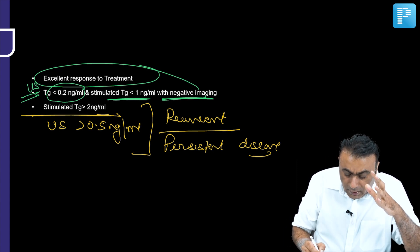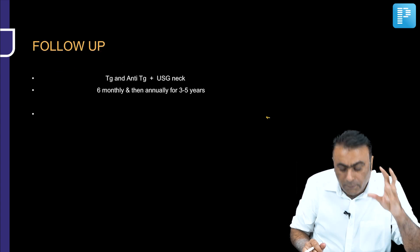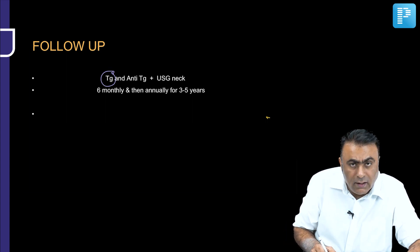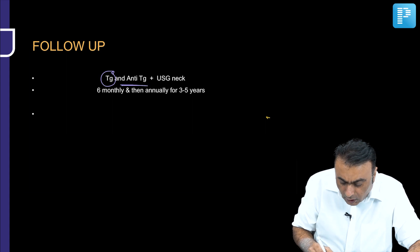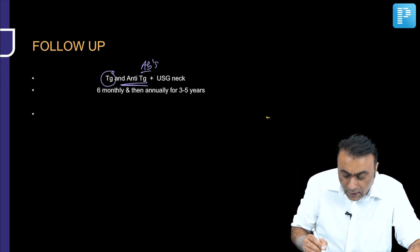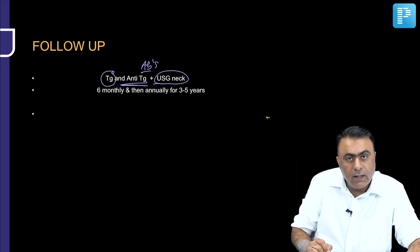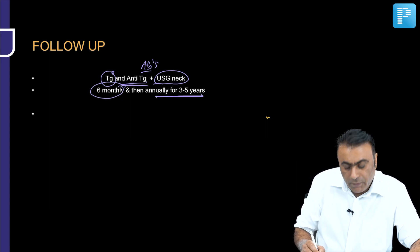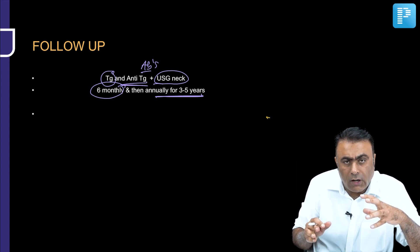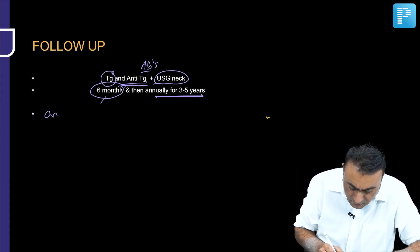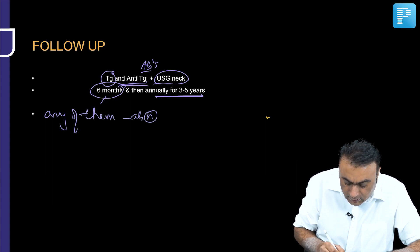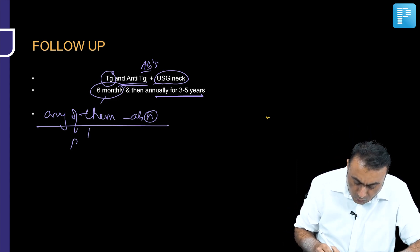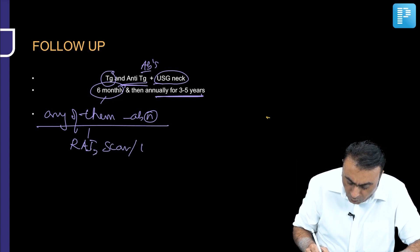For follow-up after completing treatment, we mainly do two investigations: thyroglobulin levels along with antithyroglobulin antibodies, and imaging with ultrasound of the neck. The frequency is initially 6-monthly, then annually for 3 to 5 years. If either investigation is abnormal — thyroglobulin rising or abnormal finding on ultrasound — the next step is to go for a whole body iodine scan.